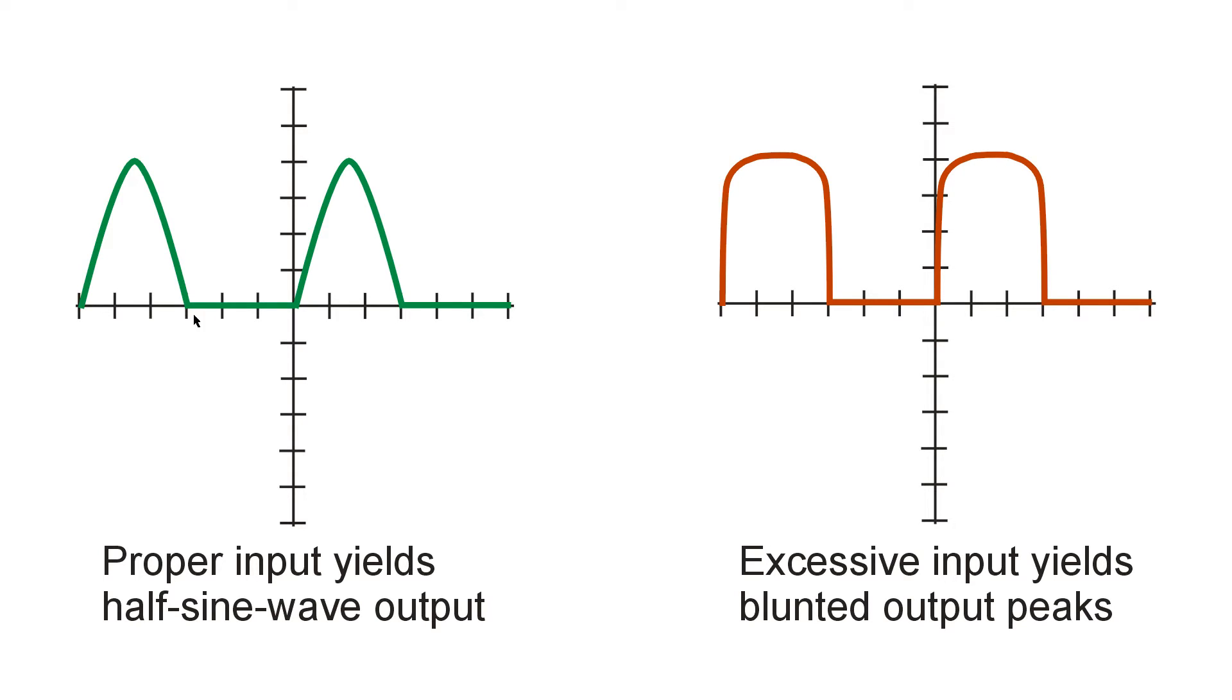When you have a proper level of input, you get what amounts to half wave rectification of a sine wave. And you get a perfectly sinusoidal waveform at the output. The harmonic energy is kept to a minimum, and the operation of the amplifier remains linear for the envelope of the modulation.